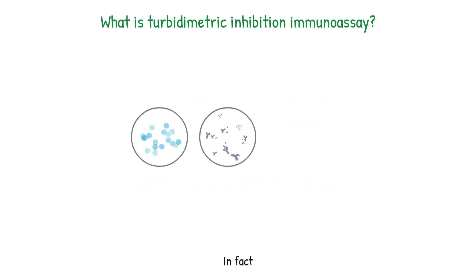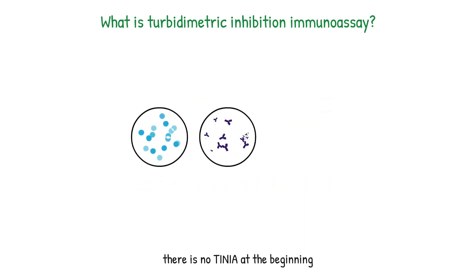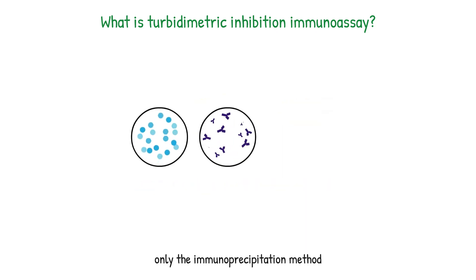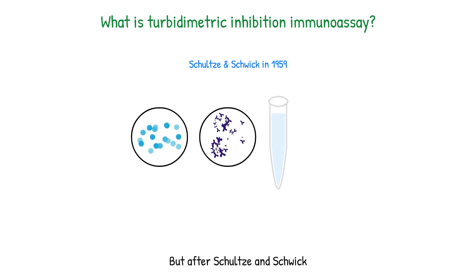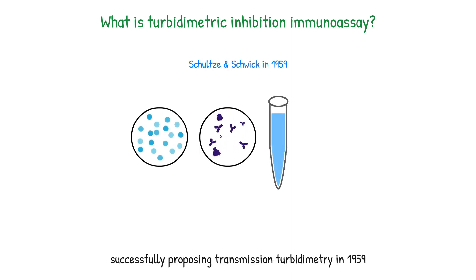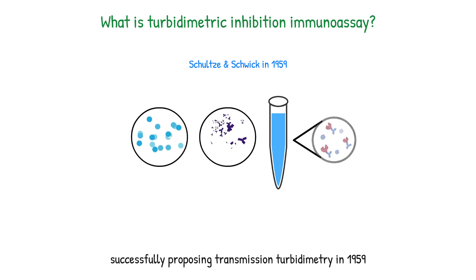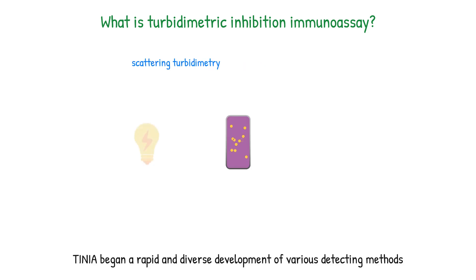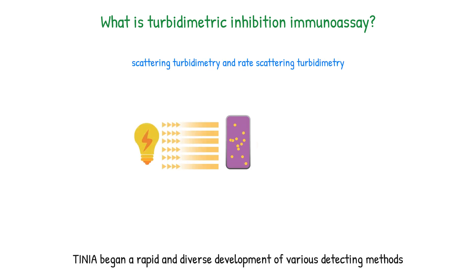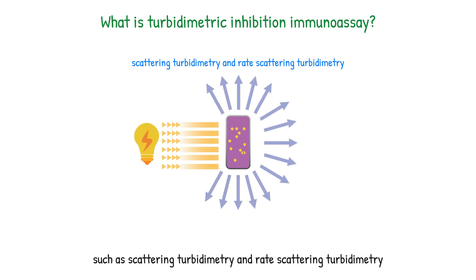In fact, there was no TINIA at the beginning — only the immunoprecipitation method. But after Schulz and Schwick successfully proposed transmission turbidimetry in 1959, TINIA underwent rapid and diverse development of various detecting methods, such as scattering turbidimetry and rate scattering turbidimetry.